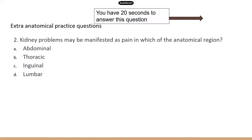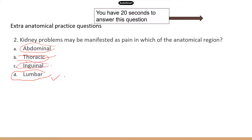Question two: to answer this, you need to know where kidneys are located — they're in the lower back area, which is between the ribs and hips. So the pain would be felt in the lumbar region, which is the correct answer. Abdominal is the belly area inferior to the ribs. Thoracic is the chest area where you find the lungs and heart. Inguinal refers to the groin, not where the kidneys are. So the correct answer is D, lumbar.